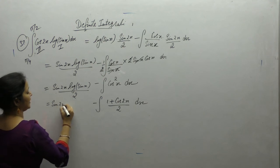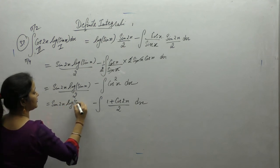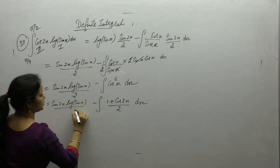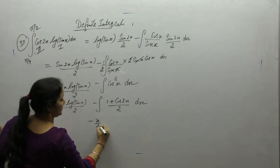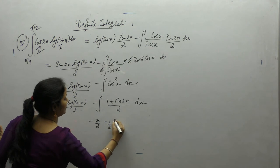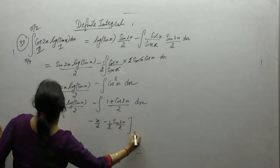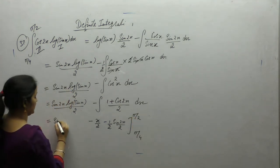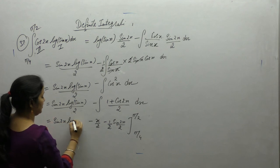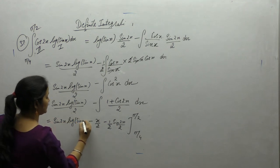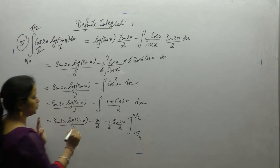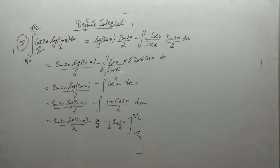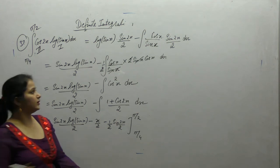So we get sine 2x · log(sin x) upon 2 minus integral of 1, which is x, minus integral of cos, which is sine. The limit is π/4 to π/2. The expression becomes sine 2x · log(sin x) upon 2 minus x by 2 minus sin 2x by 4. Now put the limits.